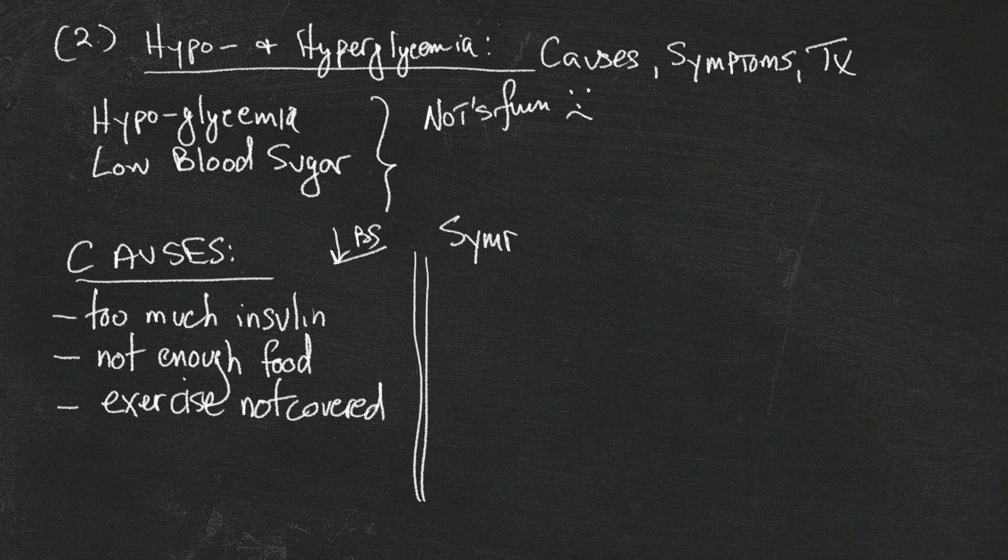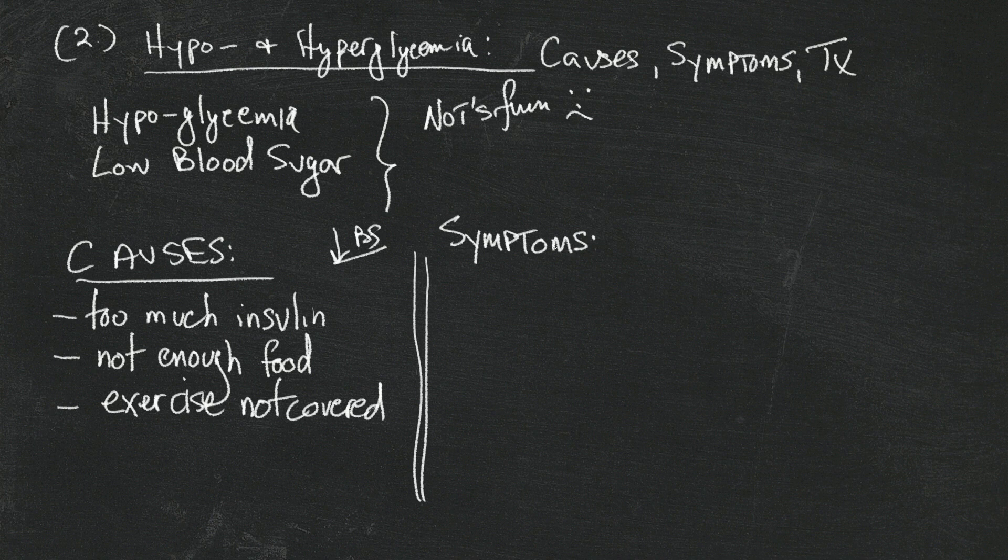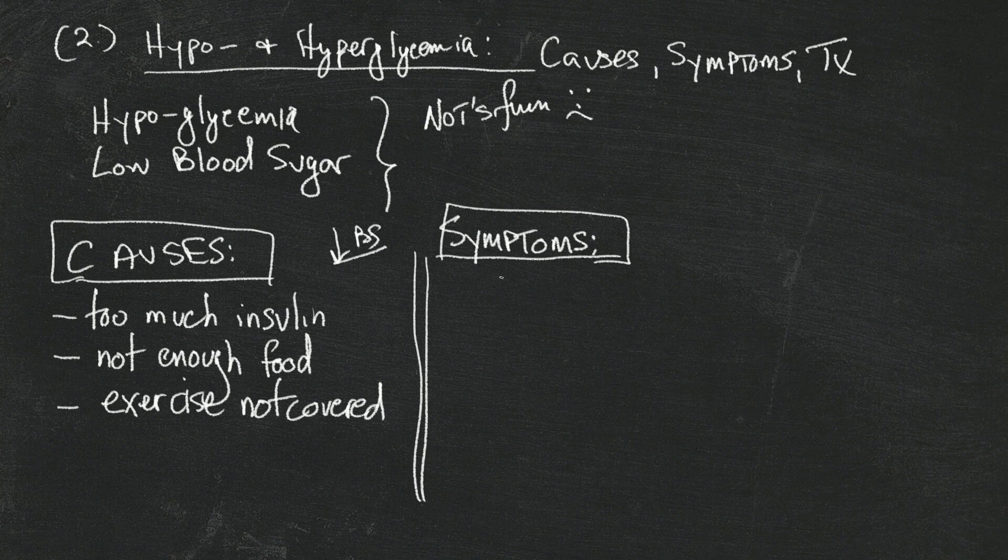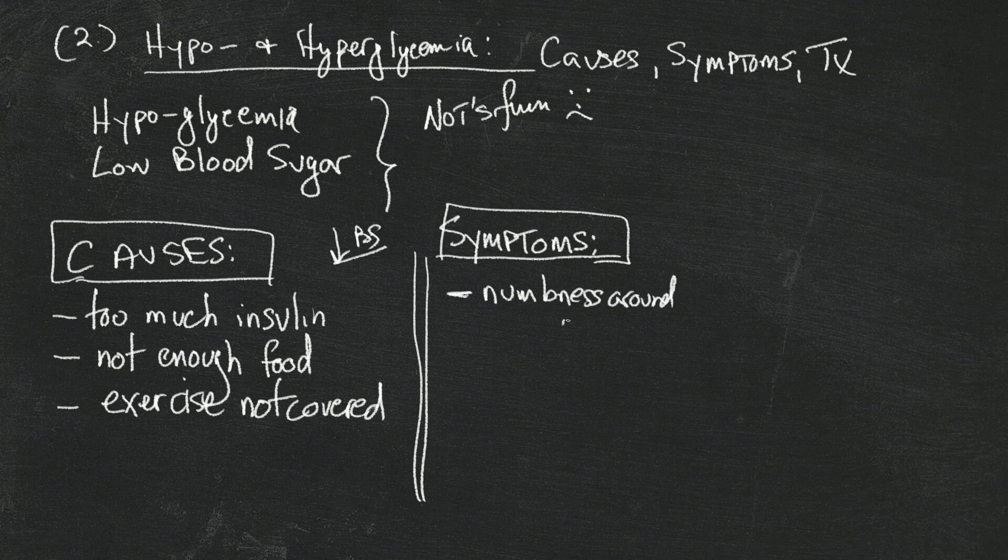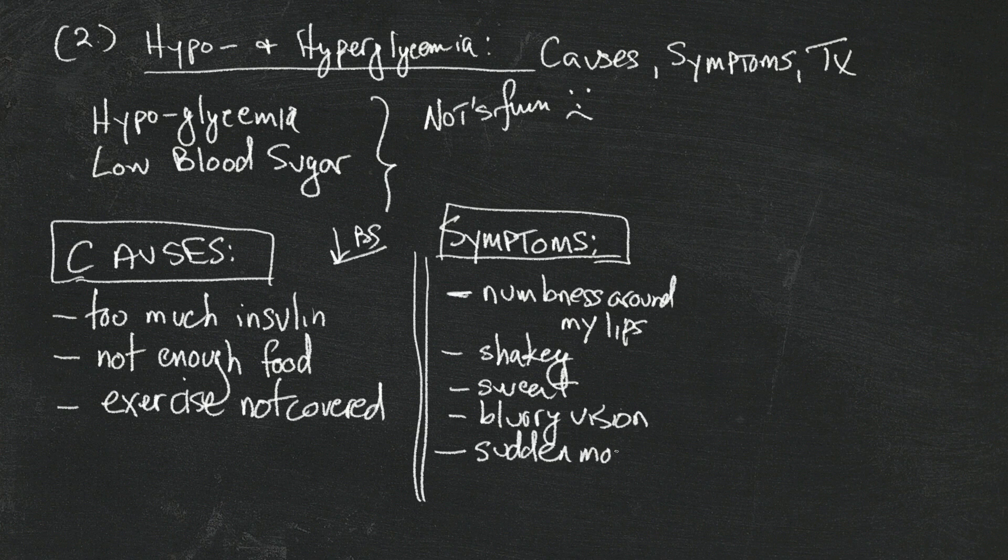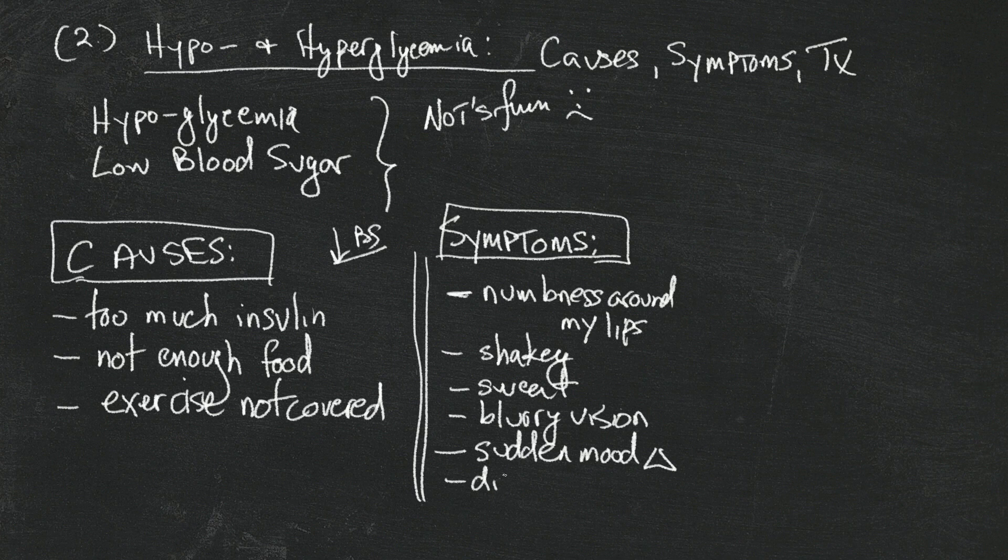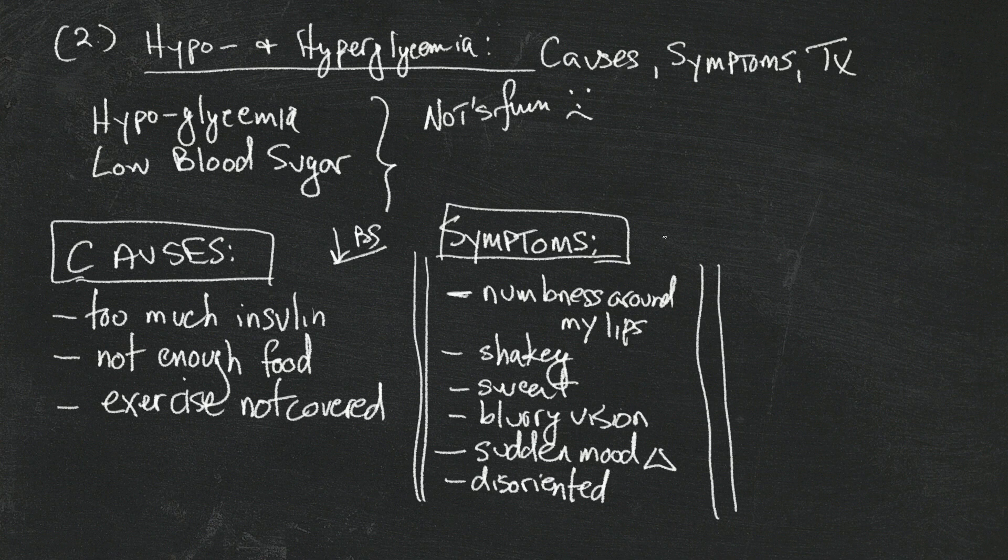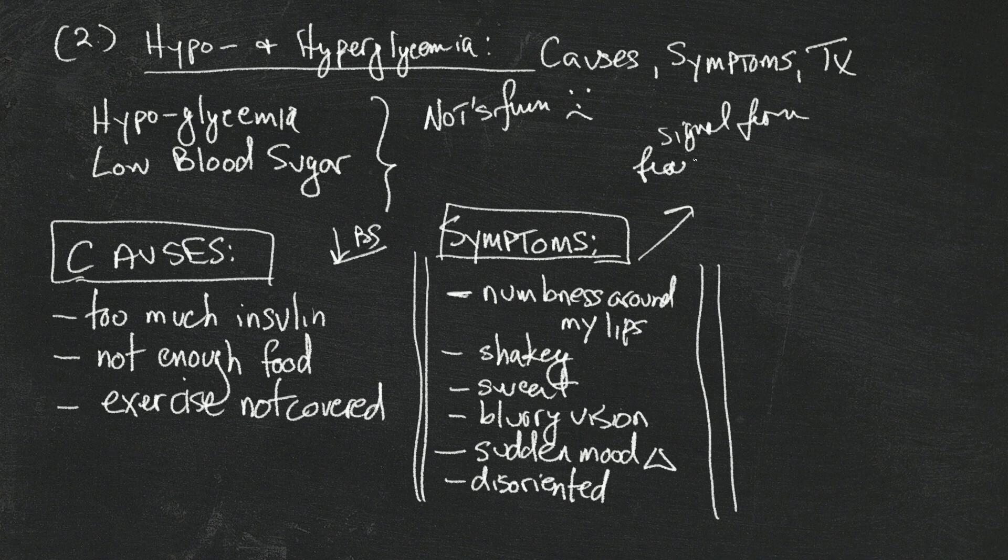Those are the sort of main causes for low blood sugar. What are the symptoms? Well, those vary from person to person and they can even vary and change over time. When I first got diagnosed, I used to have a lot of feelings around numbness around my lips. Some people feel shaky, other people sweat, some people get blurry vision.